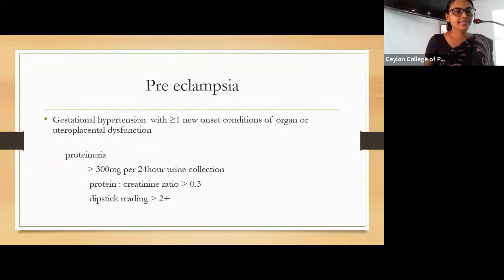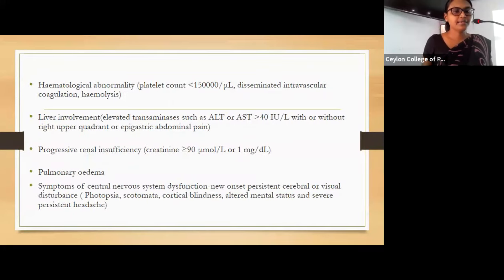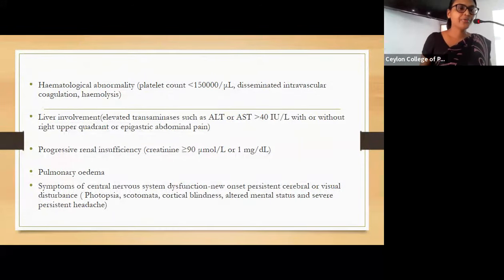Preeclampsia is defined as gestational hypertension with more than one new onset condition of organ or uteroplacental dysfunction. Indicators include proteinuria more than 300 mg per 24-hour urine collection, protein-creatinine ratio more than 0.3, or dipstick reading more than 2+. Hematological abnormalities include platelet count less than 150,000 per microlitre, DIC, or hemolysis. Liver involvement includes elevated transaminases such as ALT or AST more than 40 international units per litre, with or without right upper quadrant or epigastric pain. Renal insufficiency is indicated by creatinine more than 90 micromol per litre or 1 mg per deciliter, and presence of pulmonary edema.